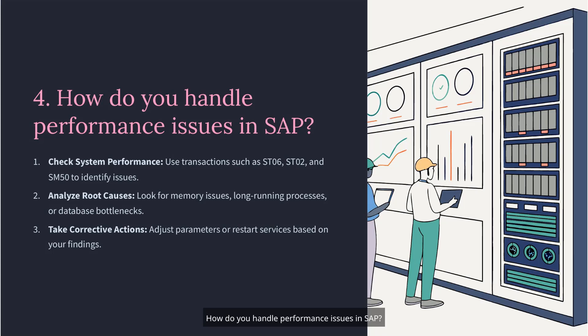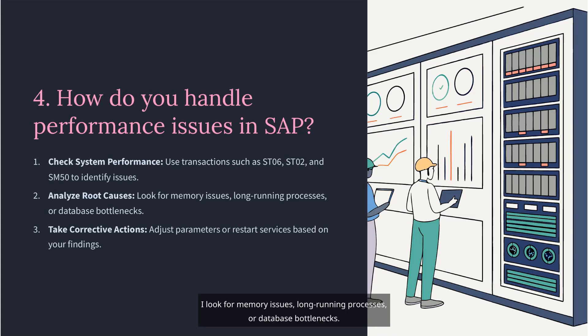Question 4: How do you handle performance issues in SAP? First, I check system performance using transactions like ST06, ST02, and SM50. I look for memory issues, long-running processes, or database bottlenecks. Based on the findings, I take corrective actions like tuning parameters or restarting services.